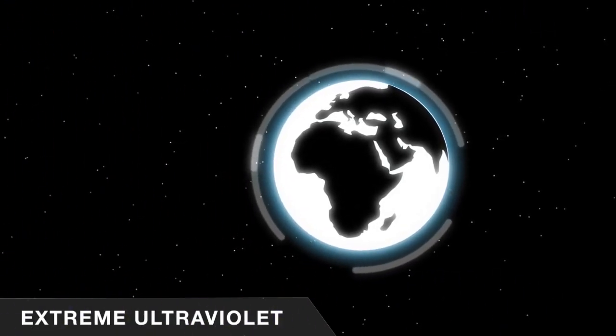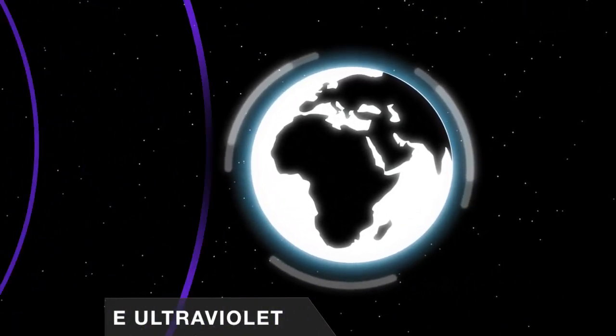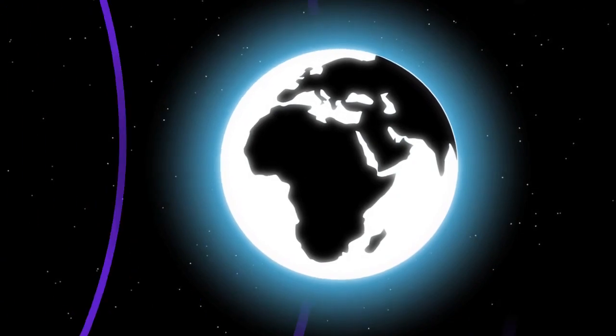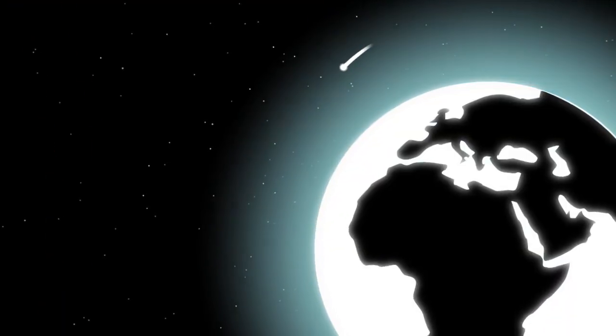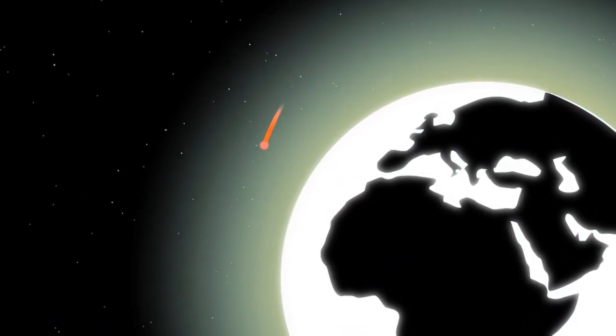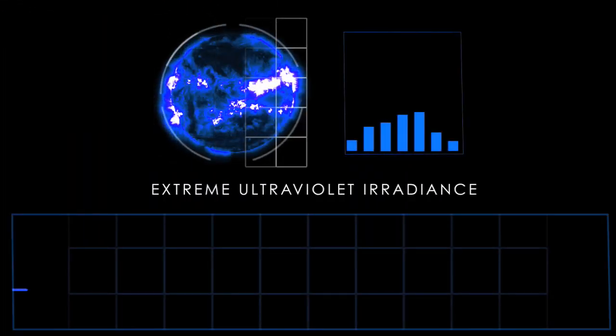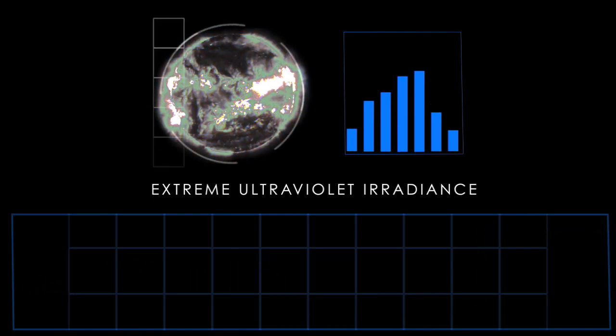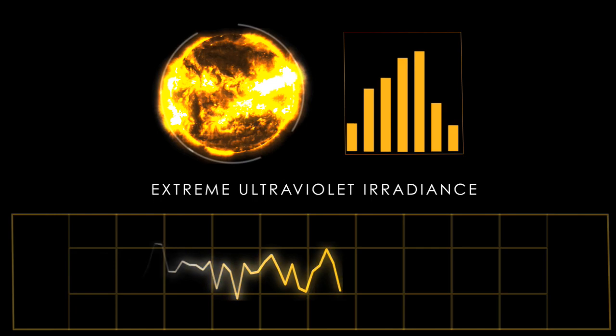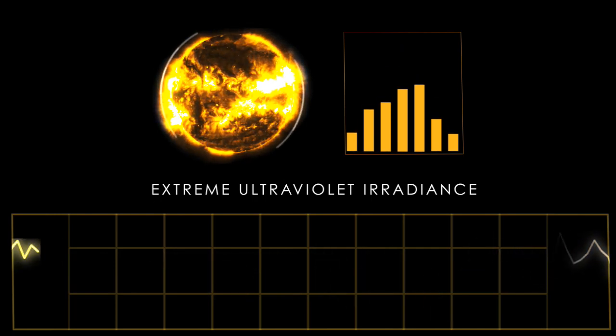SDO will also study the amount of energy the Sun puts off in extreme ultraviolet wavelengths. These are very short wavelengths that get absorbed very high up in our atmosphere, causes the atmosphere to heat, expand, and bring satellites out of orbit. Previous missions have looked at the extreme ultraviolet radiance every 90 minutes. We're going to look at it every 10 seconds. And we're going to see a lot of new stuff and we're going to learn a lot.